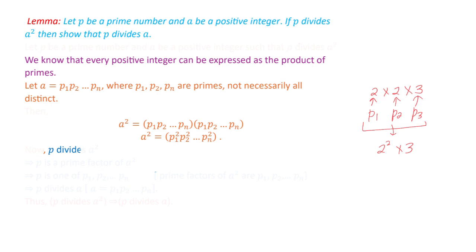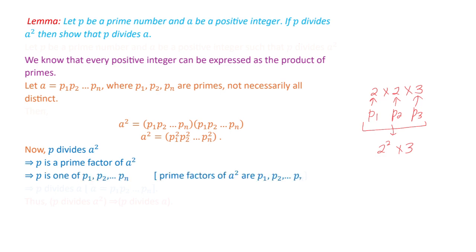Now, it is given that p divides a squared. This means that p is a prime factor of a squared. Since the prime factorization of a squared consists of p1, p2, up to pn, it means p is one of these values — one of p1, p2, up to pn. Because the prime factors of a squared are exactly p1, p2, up to pn, we get that p divides a. Since a equals p1 times p2 up to pn, and p is one of those primes, p divides a. This is what we had to prove.